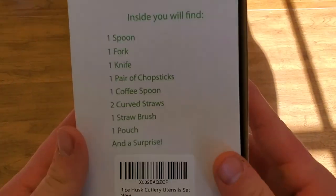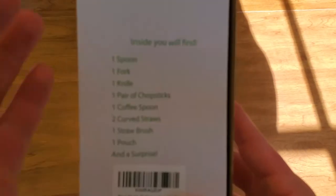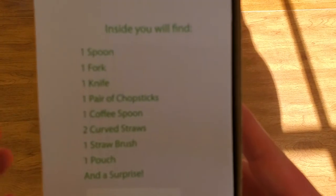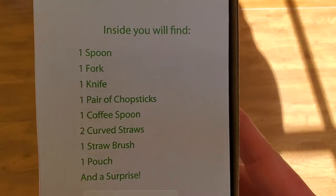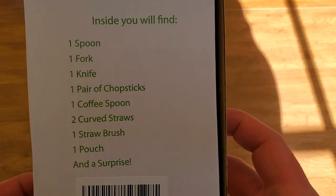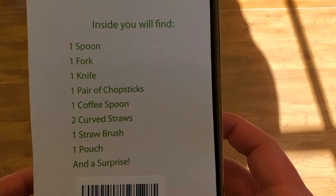I think the only other thing on the box is back here. Inside this set you will find included... come on, focus. Why are you not focusing? One spoon, one fork, one knife, one pair of chopsticks, one coffee spoon, two curved straws, a straw brush, a pouch, and a surprise.